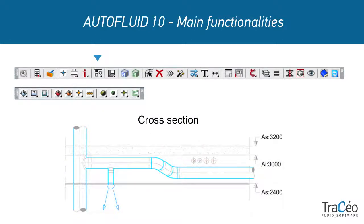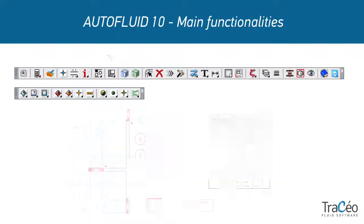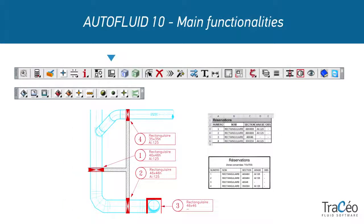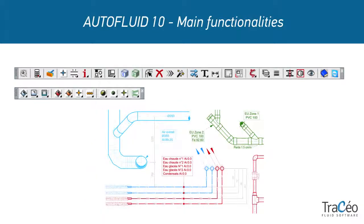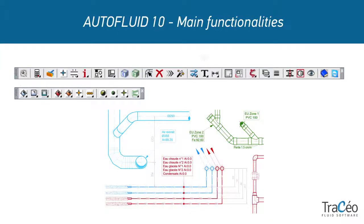Cross sections can be generated from your double line drawings, as well as openings that take into account the position of your network. A text module lets you write the most common texts already formatted in Autofluid.